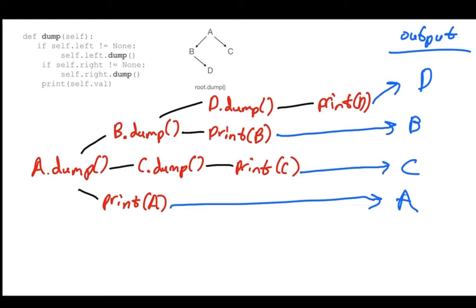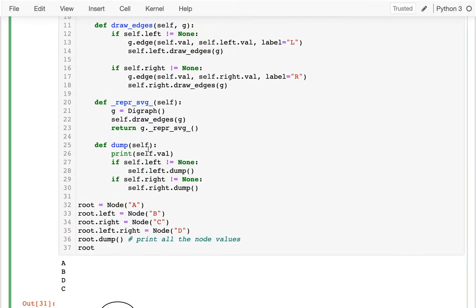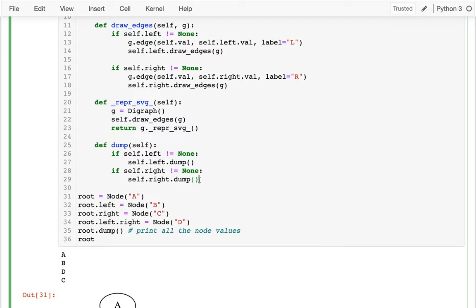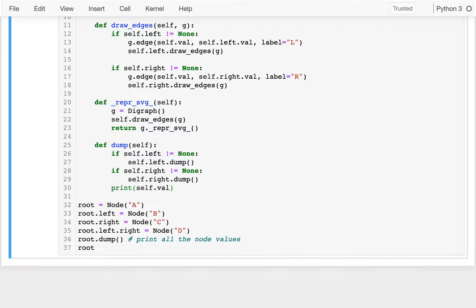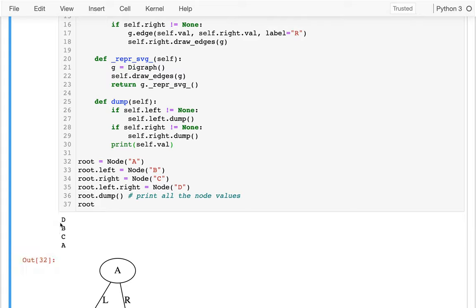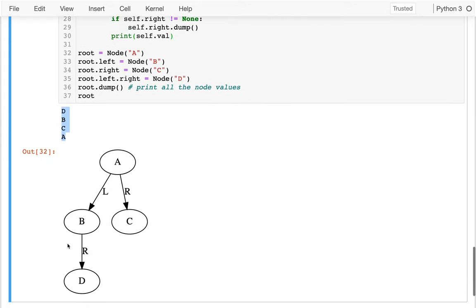This kind of thinking about recursive call order is going to come up a lot when we start searching for data — the order we traverse nodes affects performance and whether we find something quickly or slowly. Switching back to the code to verify: with print at the bottom we get D, B, C, A — exactly right. We'll be doing lots more problems like this for practical purposes.